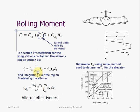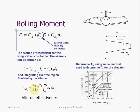The rolling moment coefficient equation includes the aileron effectiveness term CL_delta_A. This equation describes the contribution of aileron deflection to the rolling moment coefficient CL. The flap effectiveness tau can be computed the same way as for the elevator and rudder, using a graph that gives the flap effectiveness value based on the ratio of aileron size to wing size. The lift curve slope CL_alpha is computed by integrating over the region containing the aileron, yielding the aileron effectiveness as a function of the flap ratio and wing lift curve slope.